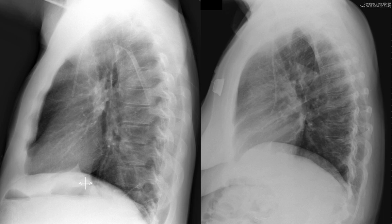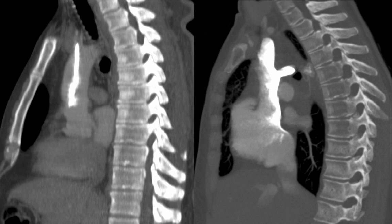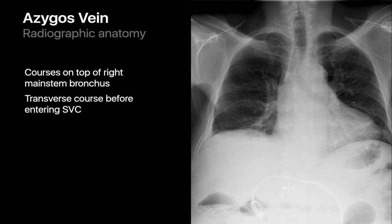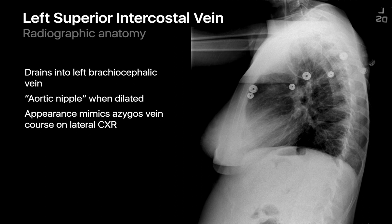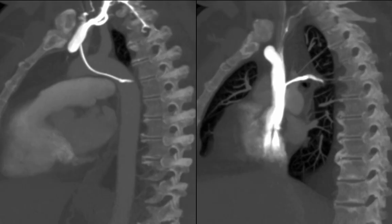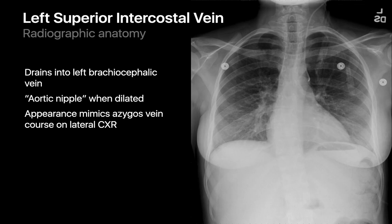A Hickman catheter situated much too anteriorly may actually be in the ascending thoracic aorta, as confirmed on sagittal chest CT. The azygos arch courses atop the right main stem bronchus in a relatively transverse course from posterior to anterior, so a malpositioned catheter in the azygos arch will overlie the aortic arch on a lateral image. A malpositioned catheter in the left superior intercostal vein is tough to distinguish from one in the azygos on a lateral image, but these are easily distinguished on a frontal radiograph by their laterality.